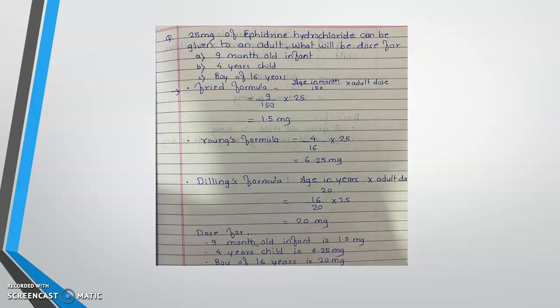Example: 25 mg of ephedrine hydrochloride can be given to an adult. What will be the dose for a 9-month-old infant? For an infant, use Fried's formula: age in months divided by 150, into adult dose. So: 9 divided by 150, into 25 = 1.5 mg. The dose for a 9-month-old infant is 1.5 mg.